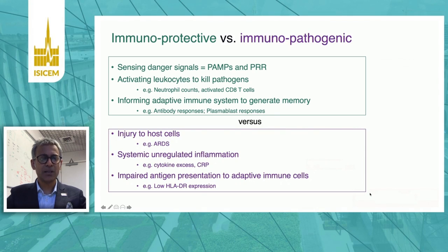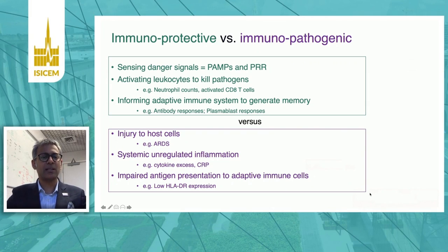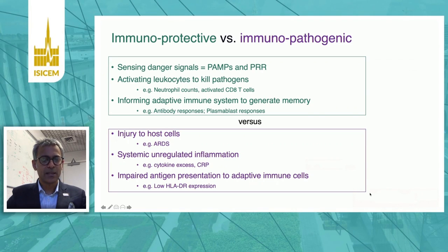What are immunopathogenic mechanisms? These are mechanisms that damage the host. An example would be viral infection of the lung, damaging the lung and causing ARDS. Excessive inflammation causing cytokine excess, and impaired antigen presentation to the adaptive immune cells, resulting in fewer memory cells — those are examples of immunopathogenic signals.